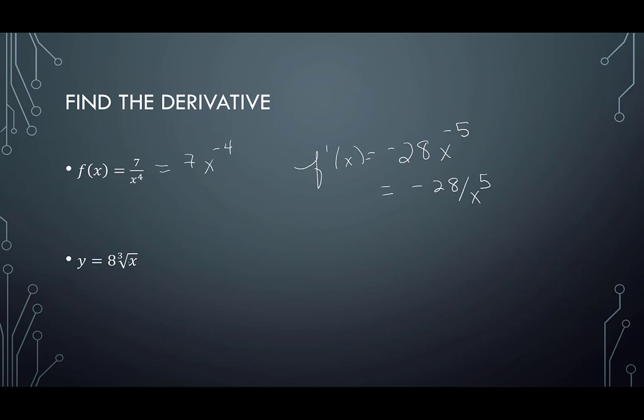The next one says y is 8 times the cube root of x. I'm going to write 8x to the 1 3rd power. This is still y. When I look at y prime, I have a third times 8. That's 8 over 3. Then I write x. I have 1 3rd. I subtract 1. That gives me negative 2 3rds. You can leave it this way if you like, or if you want to rewrite it. Think about you have a fraction. The negative 2 3rds goes in the bottom. You could write it as 2 3rds.